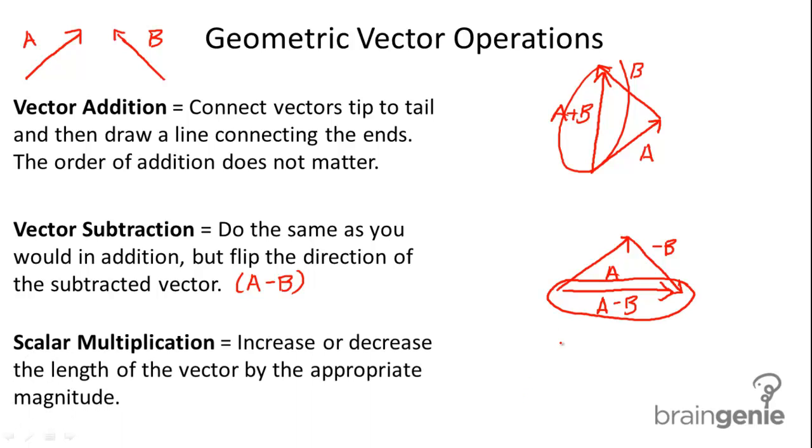And then lastly, scalar multiplication. Increase or decrease the length of the vector by the appropriate magnitude. So let me do two examples. I'll do 2A. So I'm gonna basically take A and just double its length. So that would be my new vector. That would be 2A. And then I'll do half A. So half A, it'd be pointing in the same direction. It would just be half the length of A normally.